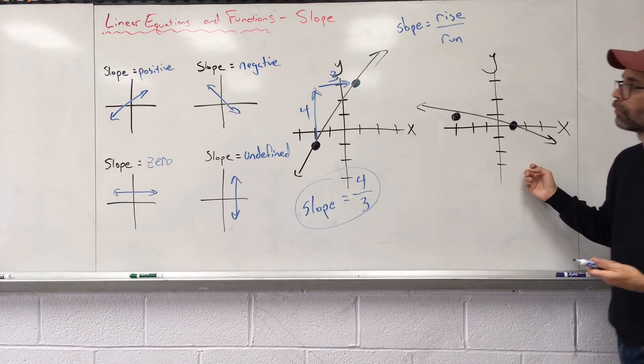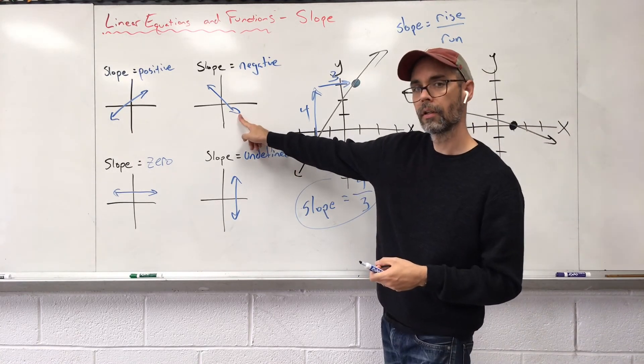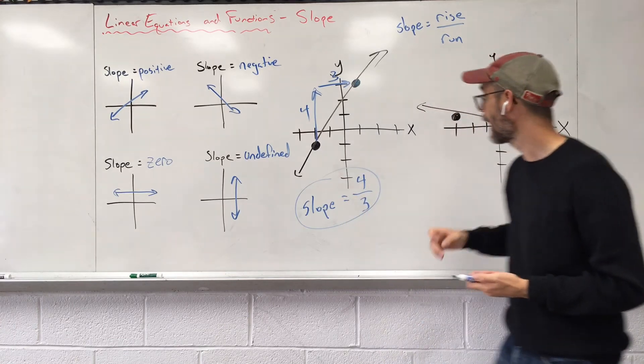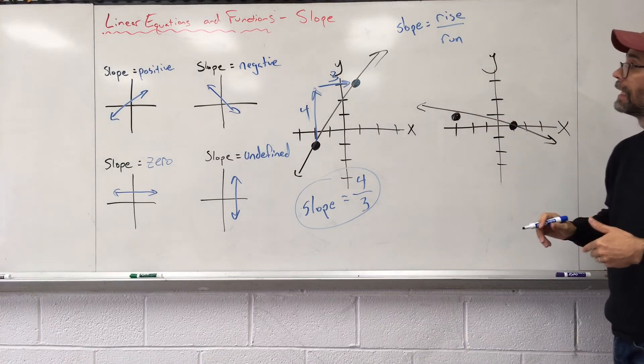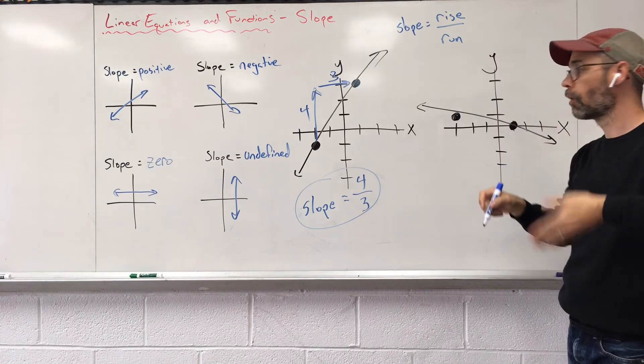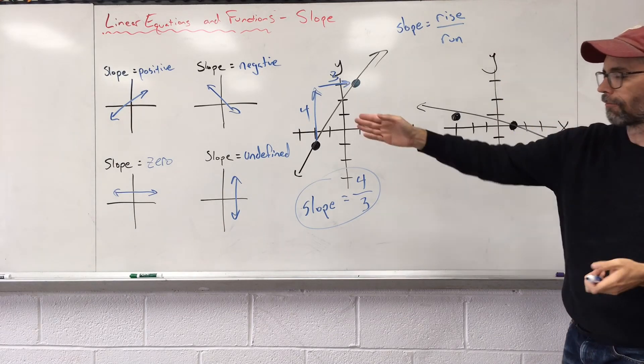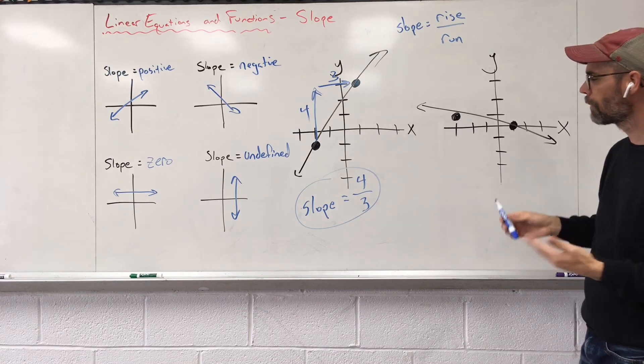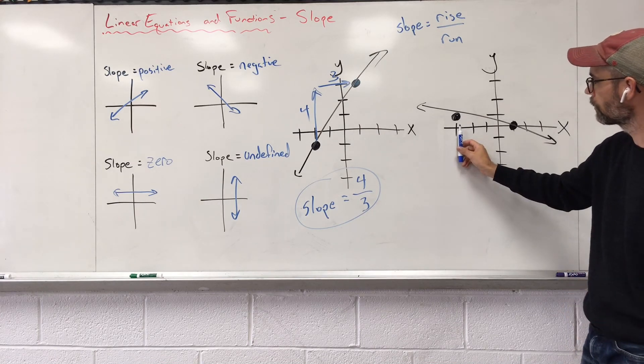What if our line goes the other direction? We already know that a line that looks like this is going to be negative. Let's see if that happens here. Let's continue looking at this rise and run situation. Rise, how much do we go up and down? Reading a book left to right, I want to read my graphs left to right.